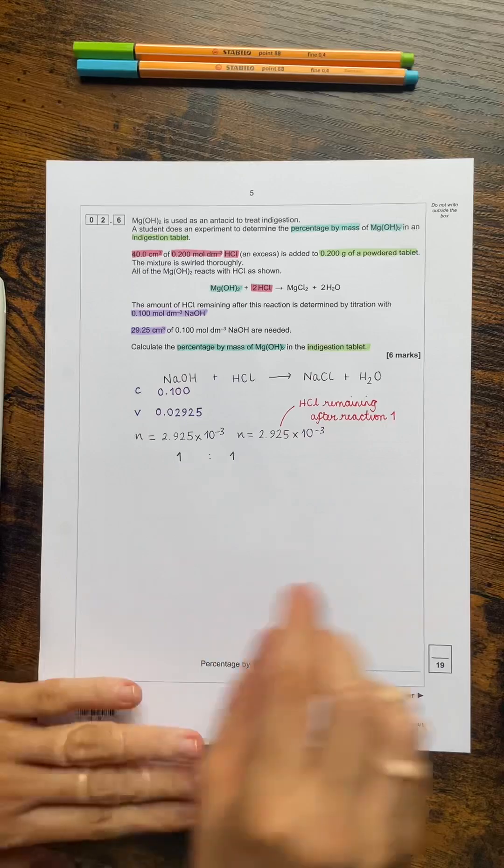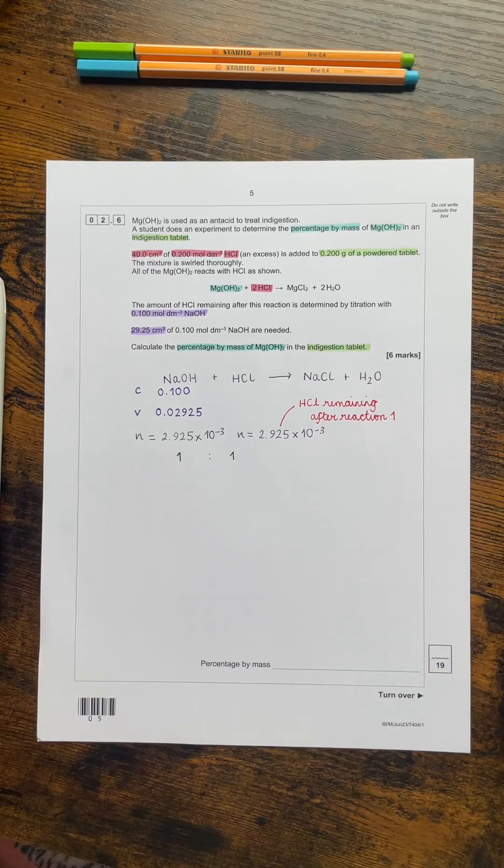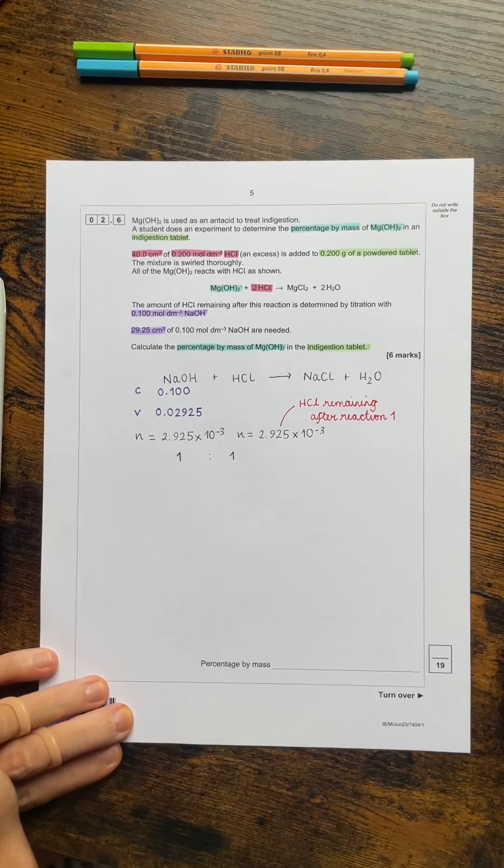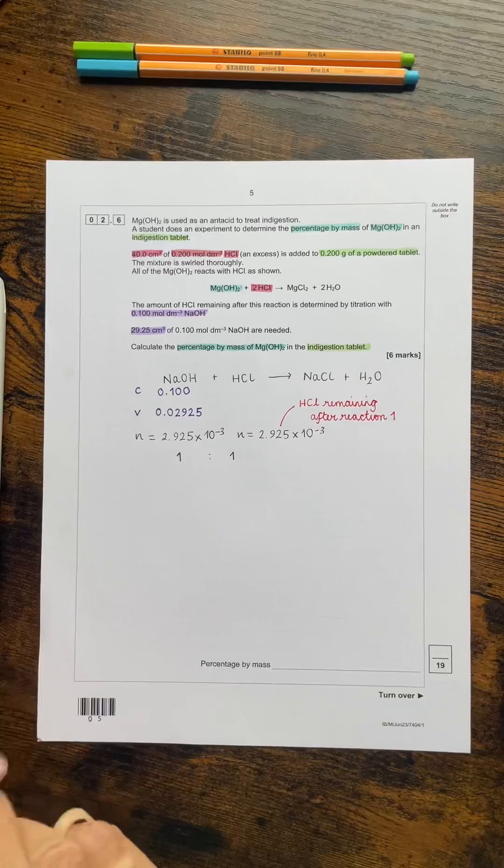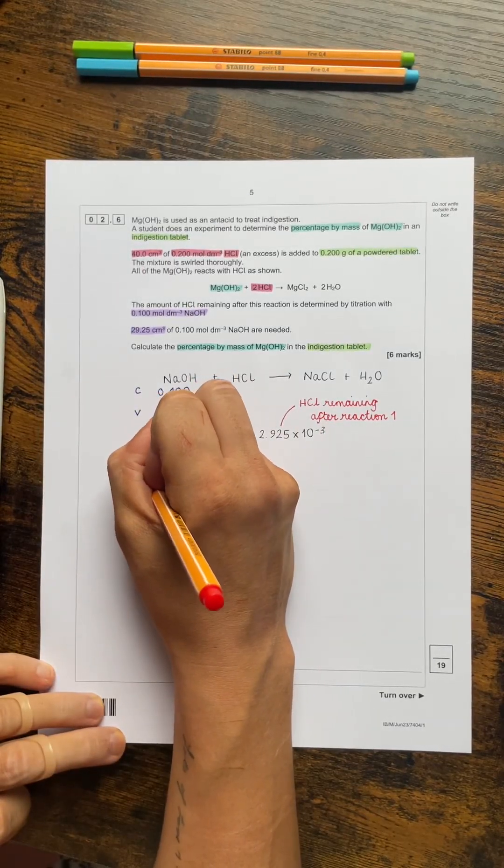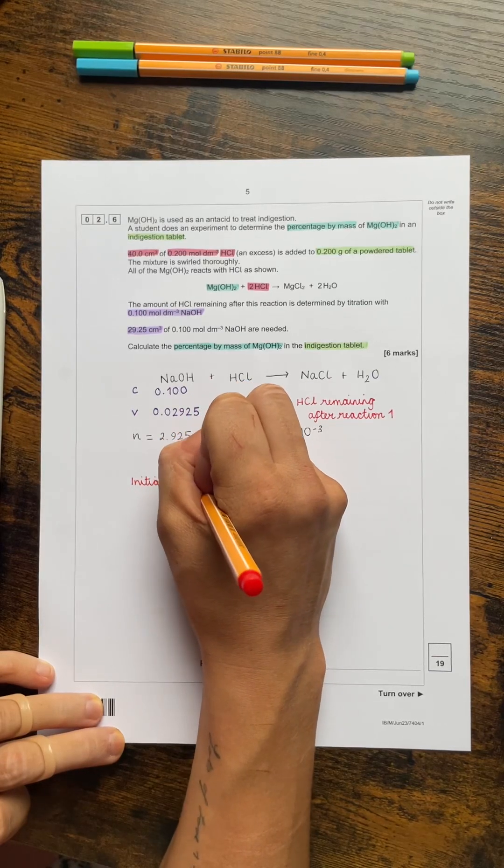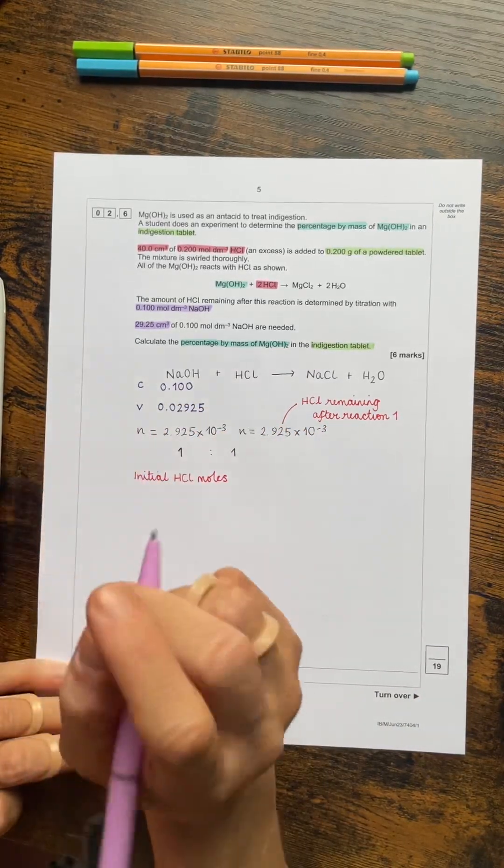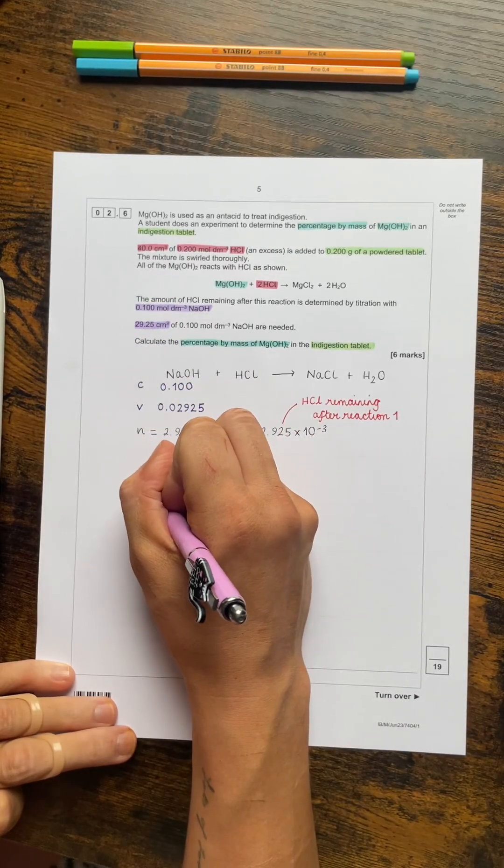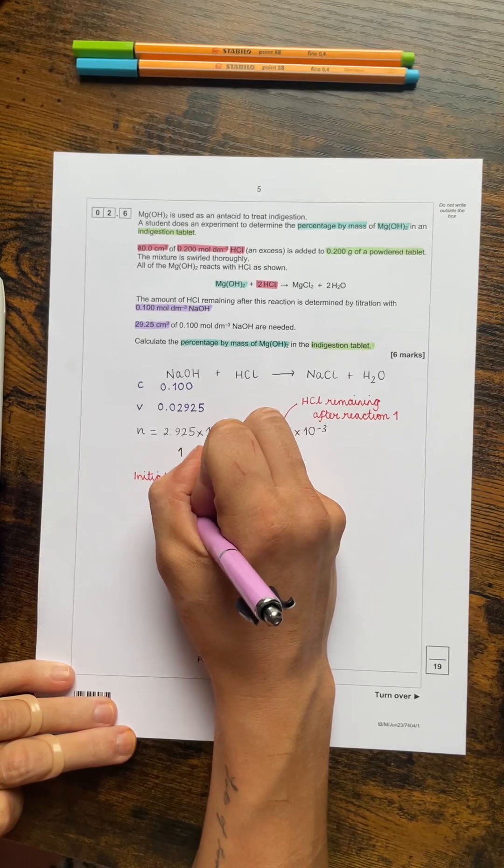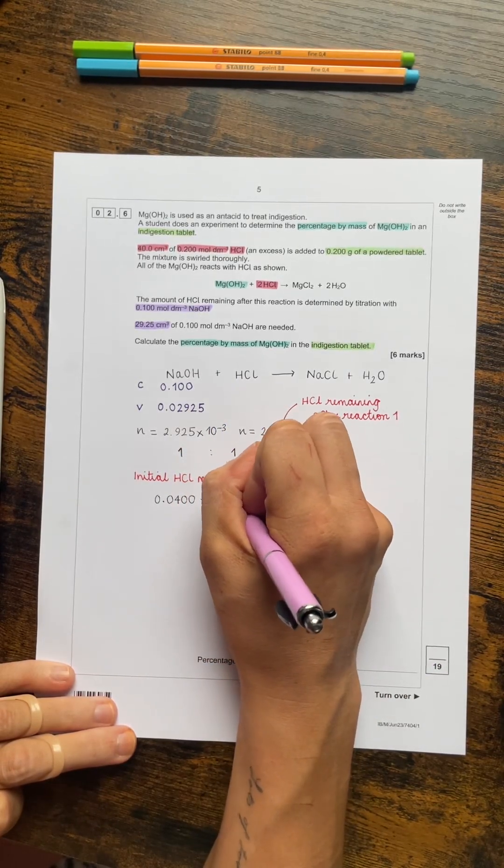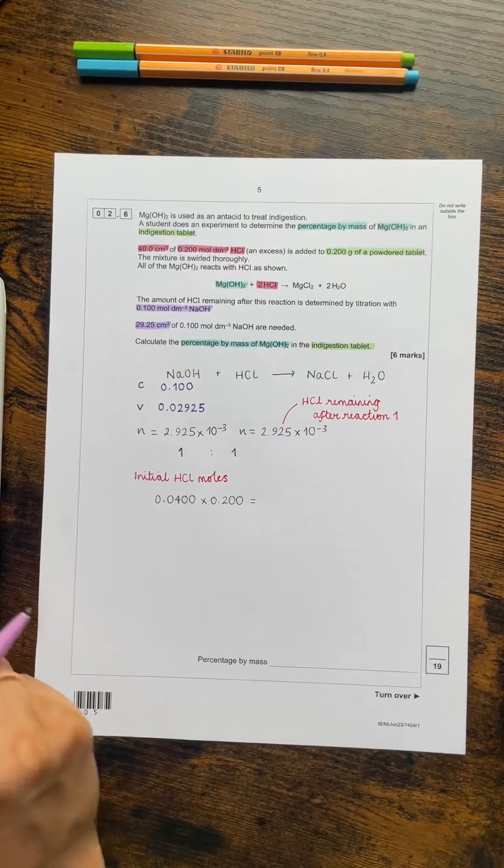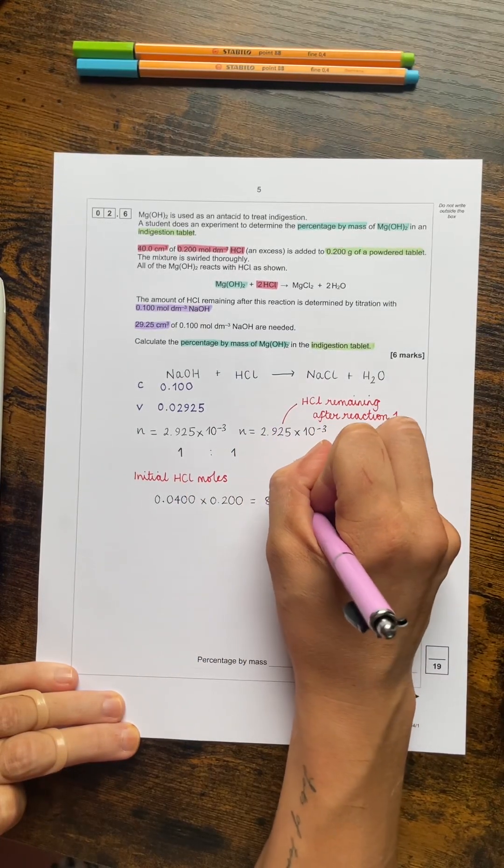Now we can calculate at this point the moles of hydrochloric acid that we had at the beginning in excess. So 40 centimetres cubed, 0.2 mol per decimetre cubed HCl. So again, I'm going to choose to label this so that I know what it is. I'm going to call it the initial HCl moles. And I'm going to work that out by doing my volume, which again I need to divide by 1000 to get it into decimetres cubed. So 0.0400 and then times that by the concentration of 0.2 and that will give us the initial moles. Which was 8 times 10 to the minus 3.